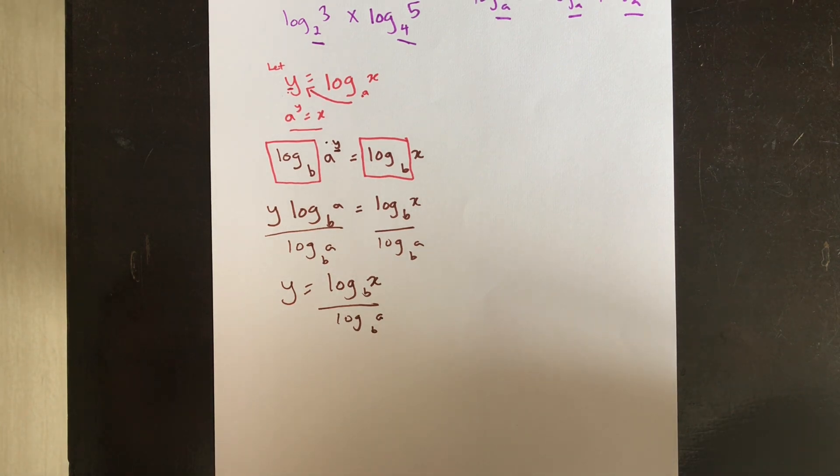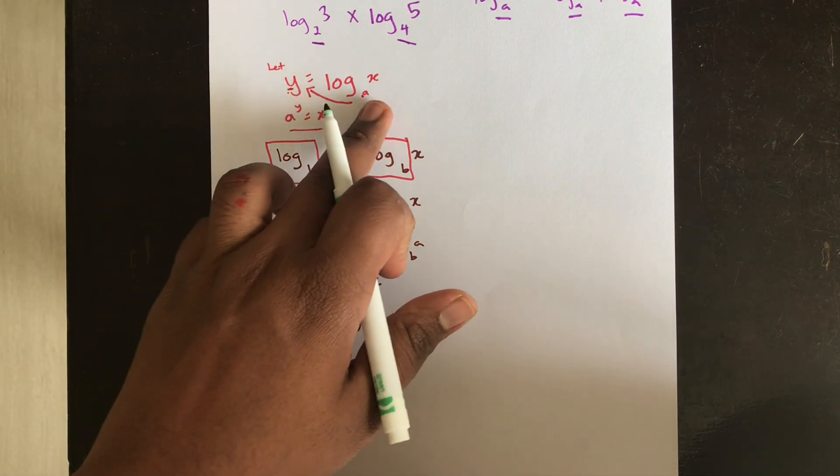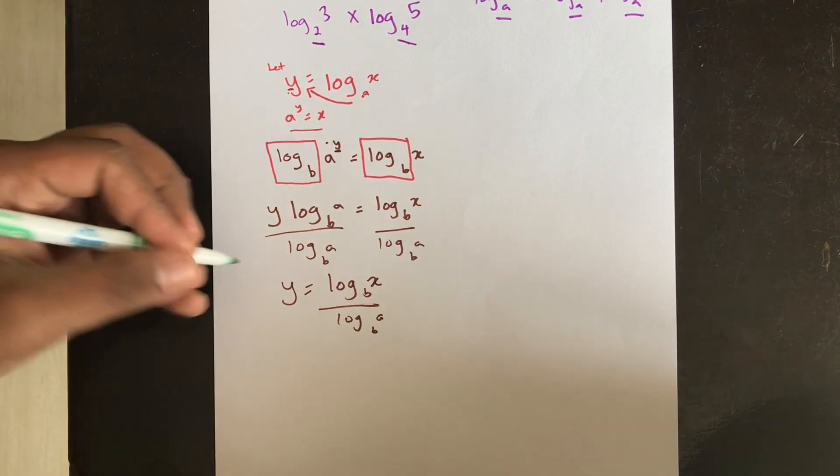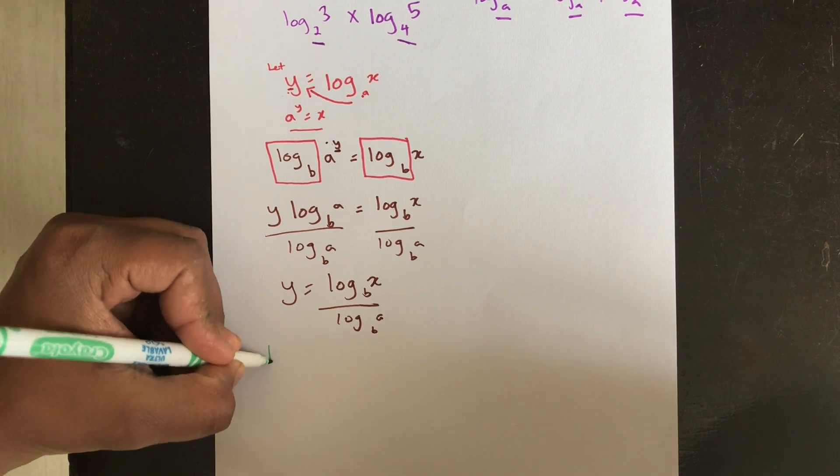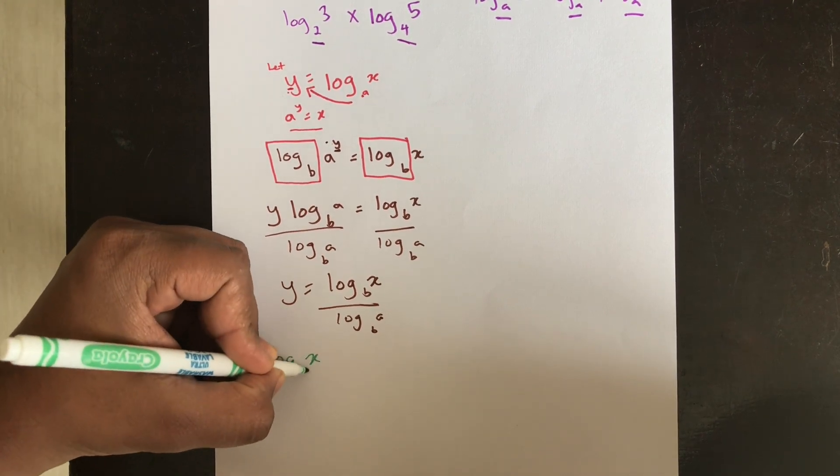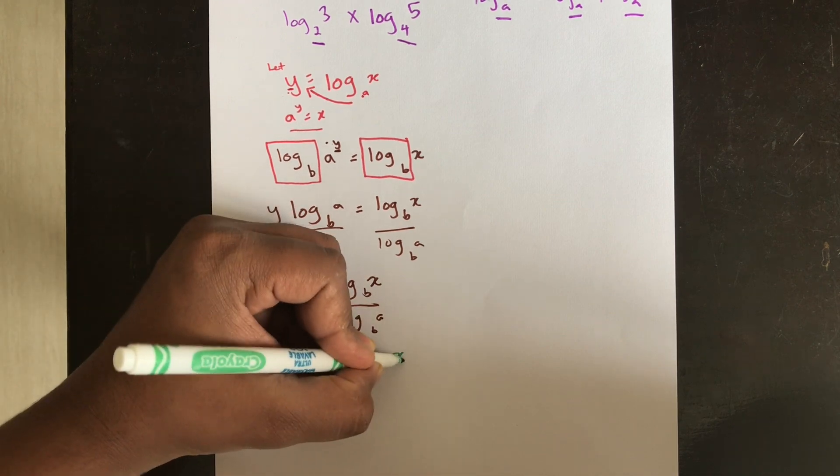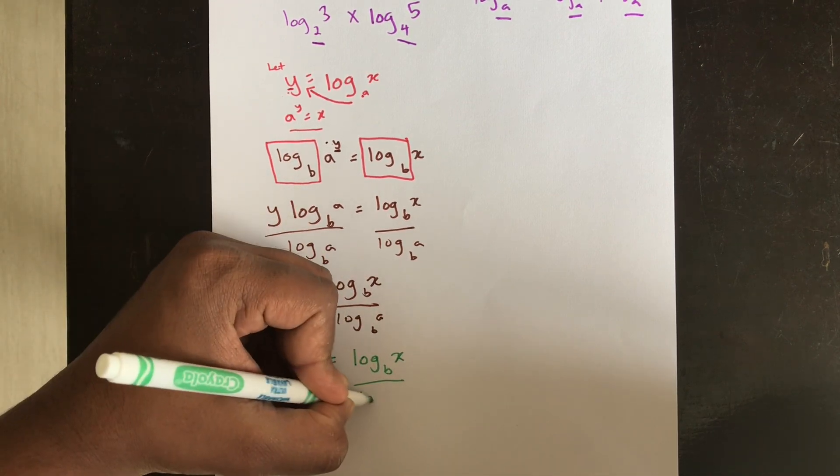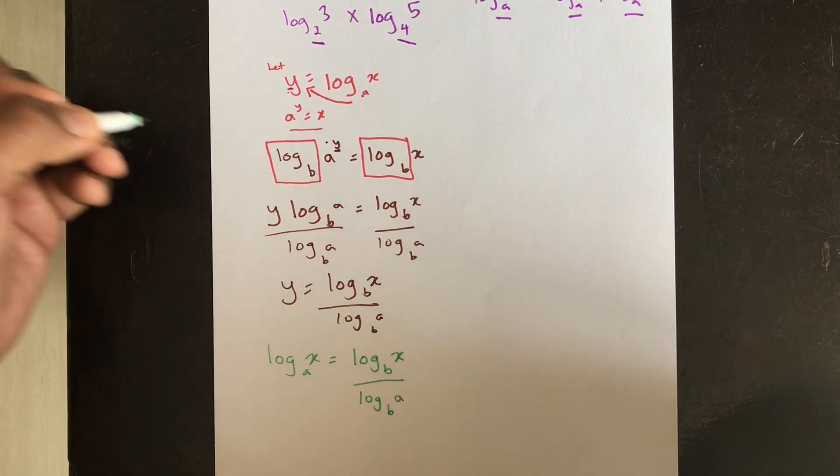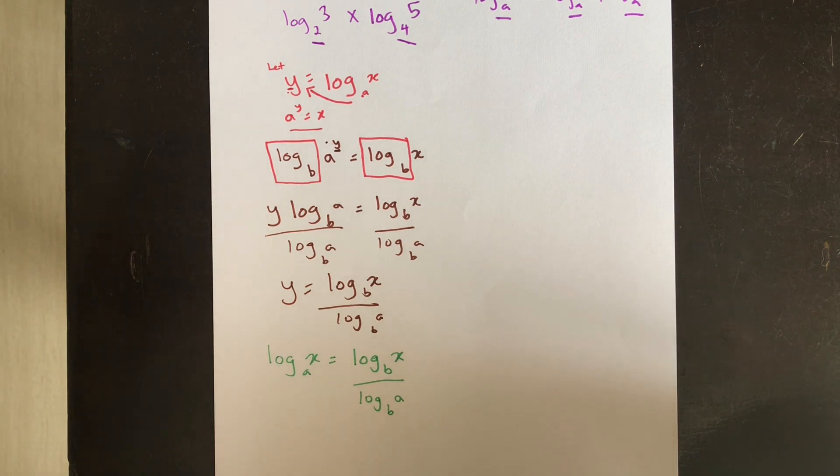We also realized that y was equal to log x base a. Therefore I'll substitute it back. So log x base a is equal to log x base b over log a base b. This is the change of base technique.